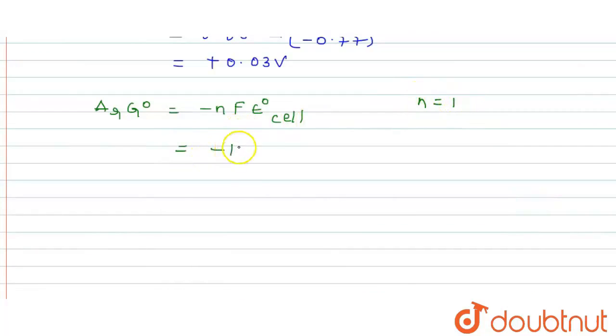Therefore, minus 1 into 96400 into 0.03. E° cell we got as 0.03. And here, we get the value as minus 2895 joule per mole.